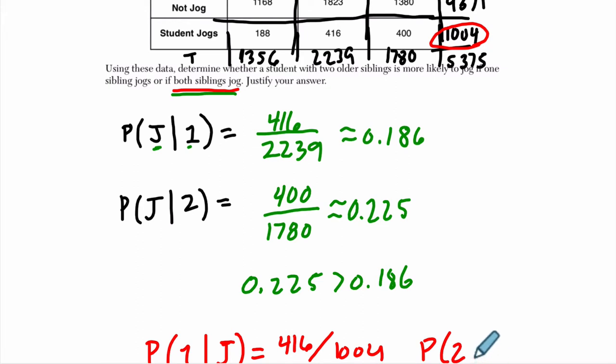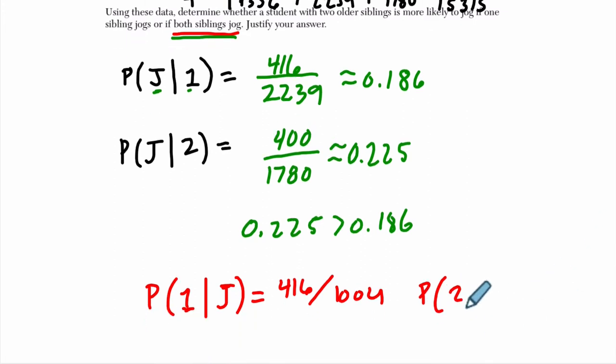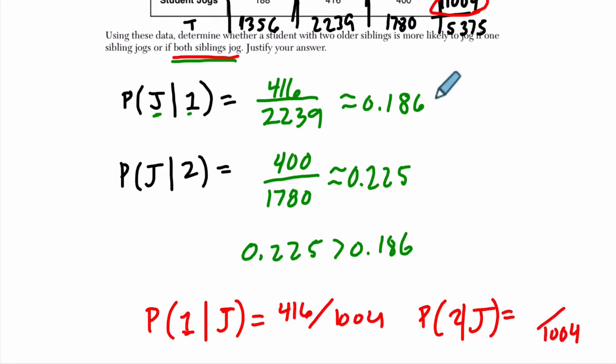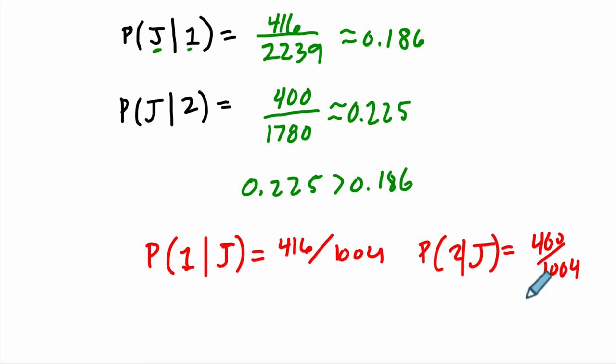And then if you repeat the process, you say, what's the probability that they have two siblings that jog given that you know they're a jogger? So there are 1,004 students who jog in total, and out of them there are 400 who have two siblings that jog. Now interestingly, if you look at this, it looks like you're actually less likely to jog if you have two siblings. You might think that at first, because what this is saying is 400 out of 1,004, that's smaller than 416 out of 1,004.